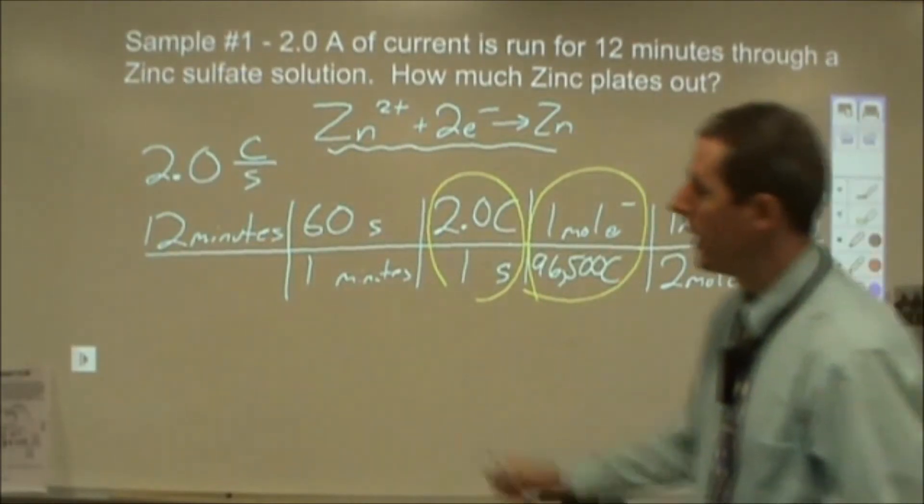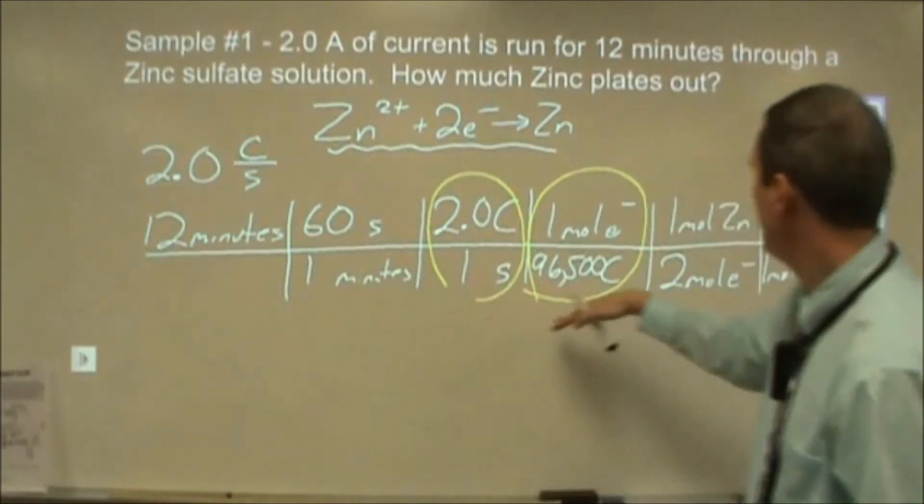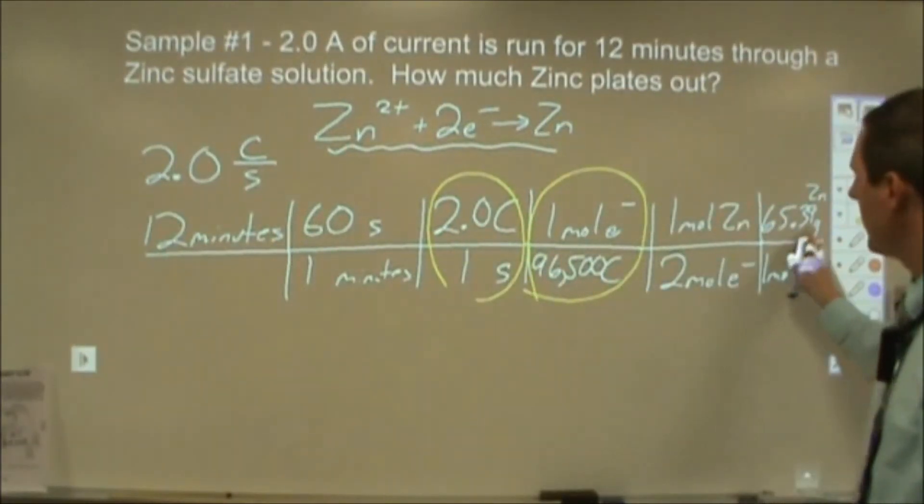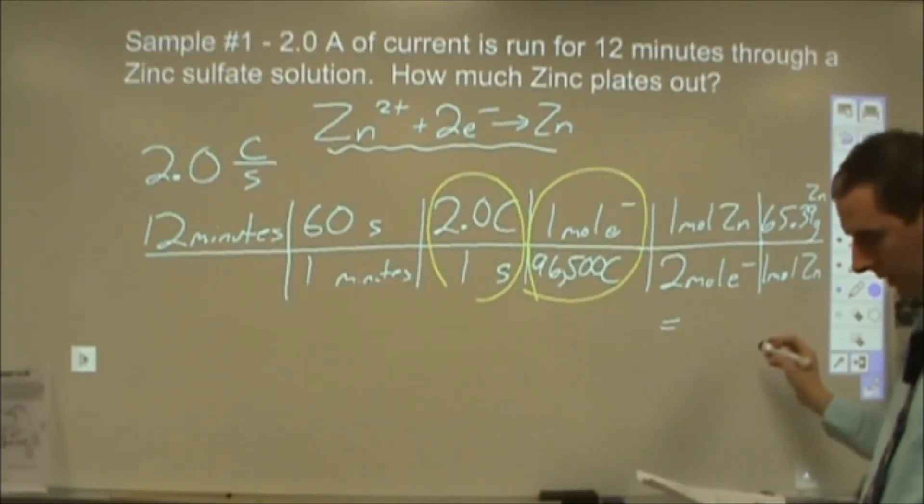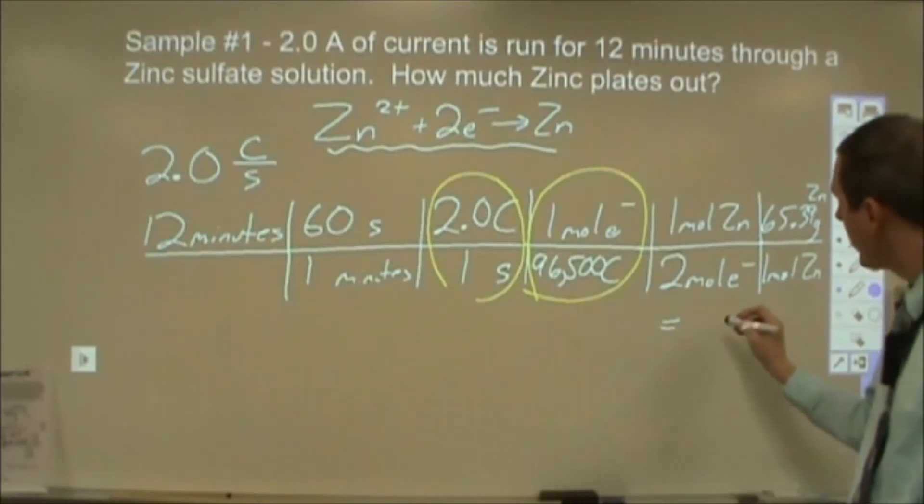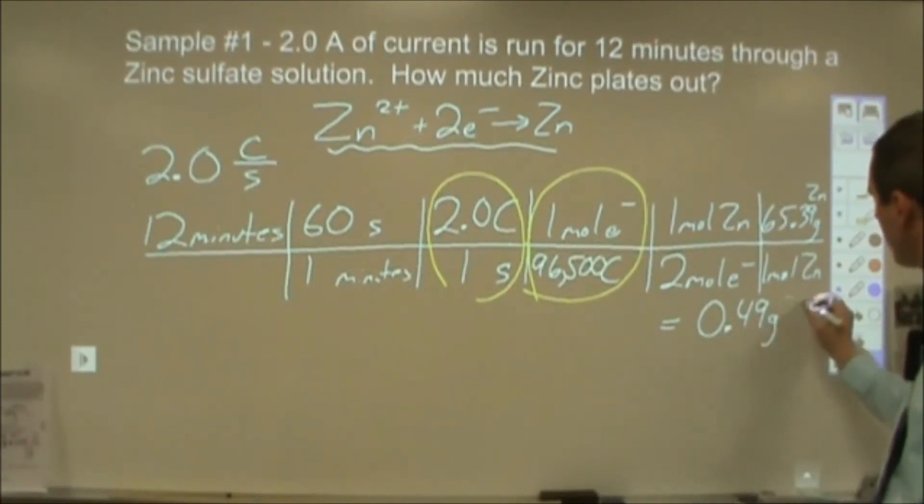And now I can go through and I can do 12 times 60 times 2 times 65.39 divided by the Faraday number divided by 2. And it will tell me how many grams of zinc I get. Now for this one, I got 0.49 grams of zinc.